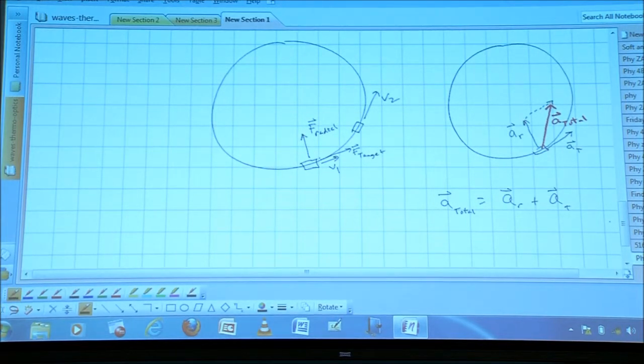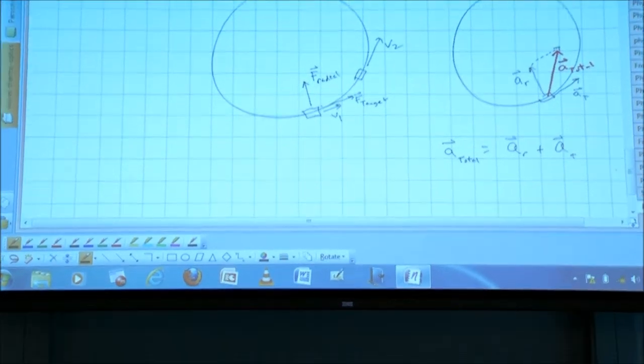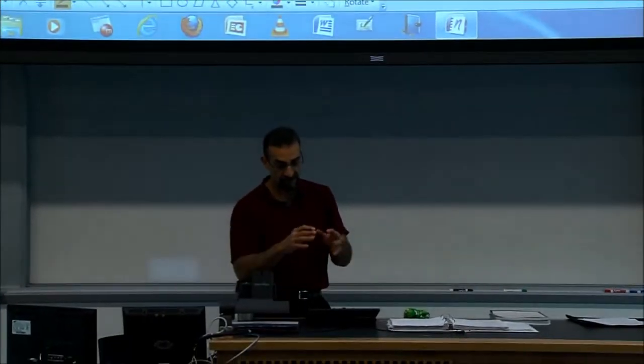So you should be able to figure out the tangential acceleration from a change in speed and the radial acceleration from centripetal forces, centripetal acceleration. And we add them vectorally to come up with a total acceleration.